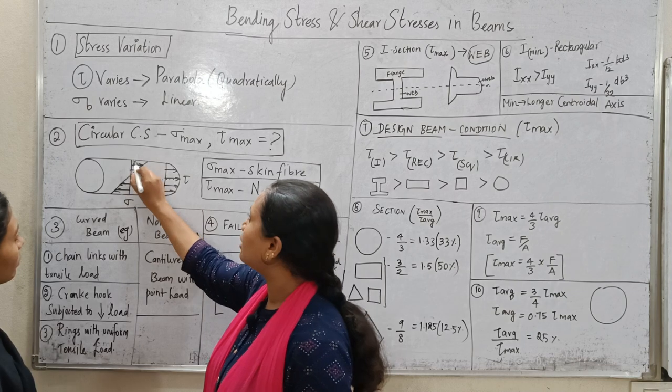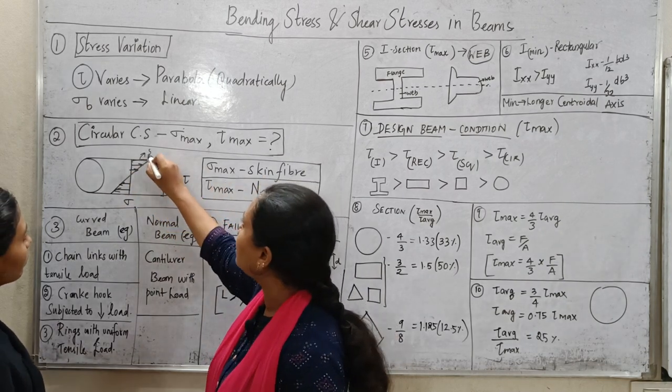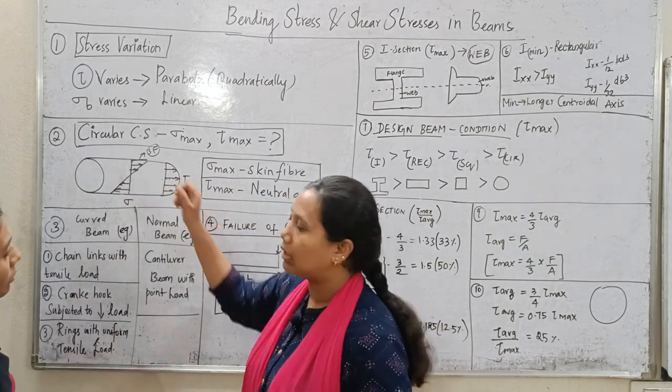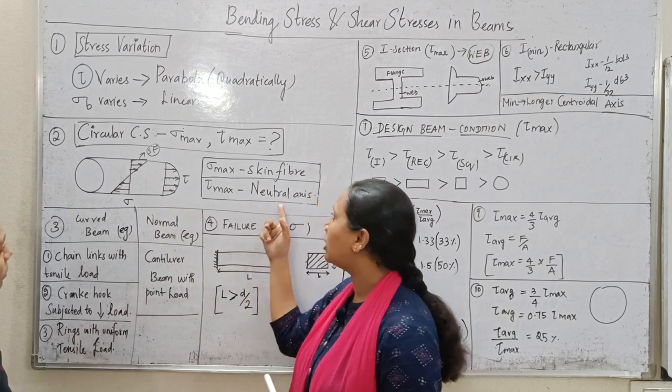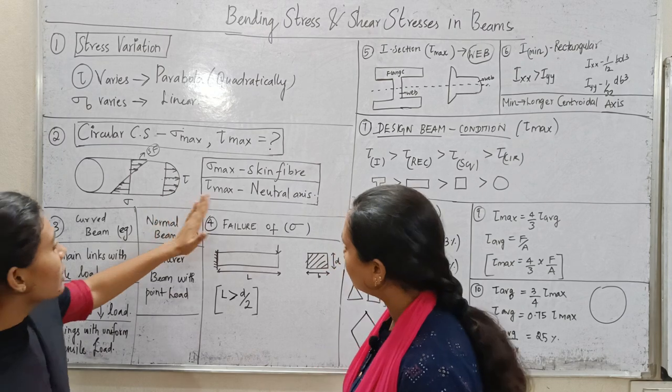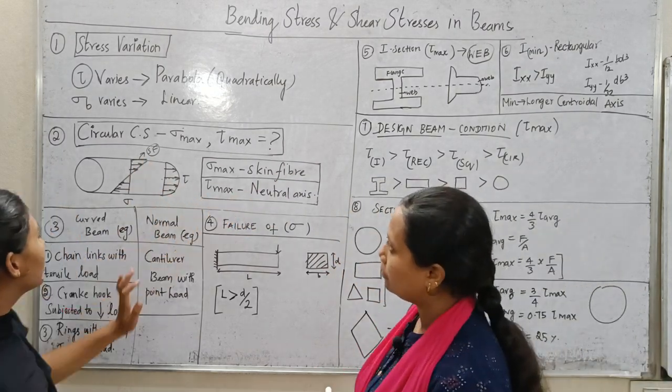This is for bending. This is for skin fiber. In bending, skin fiber has maximum bending stress and shear stress neutral axis. Maximum bending stress is skin fiber. Maximum shear stress neutral axis.